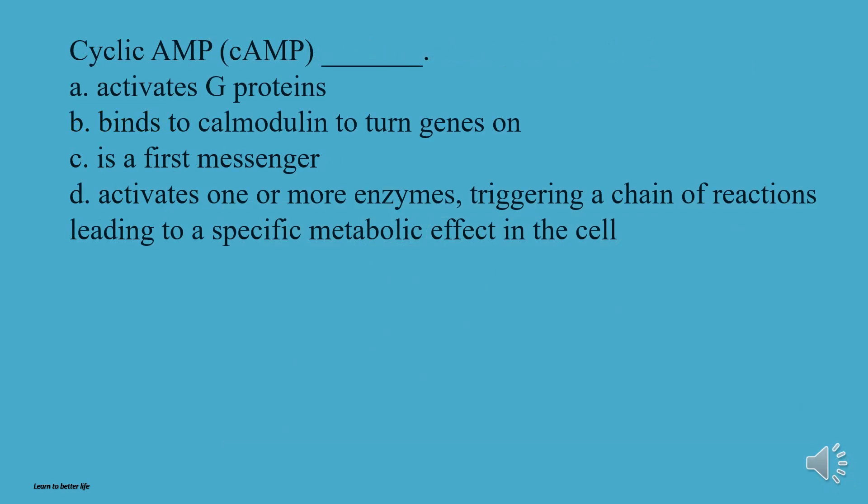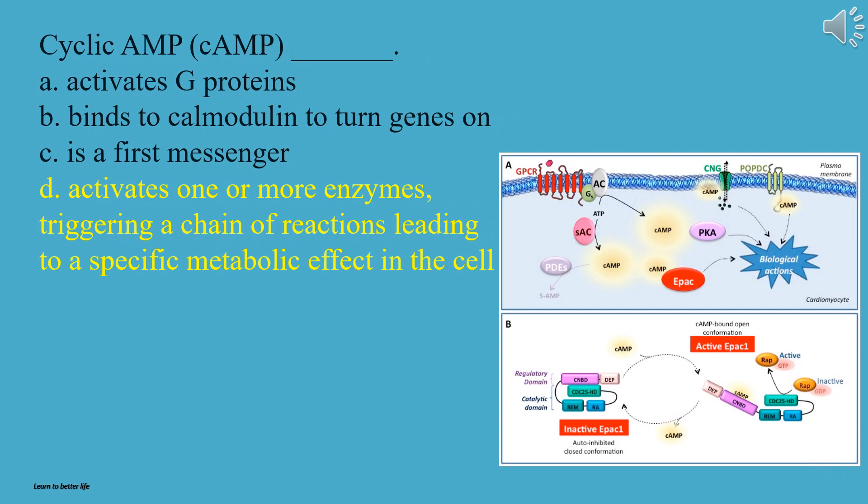Cyclic AMP (cAMP): A, Activates G proteins. B, Binds to calmodulin to turn genes on. C, Is a first messenger. D, Activates one or more enzymes, triggering a chain of reactions leading to a specific metabolic effect in the cell. The answer is D.